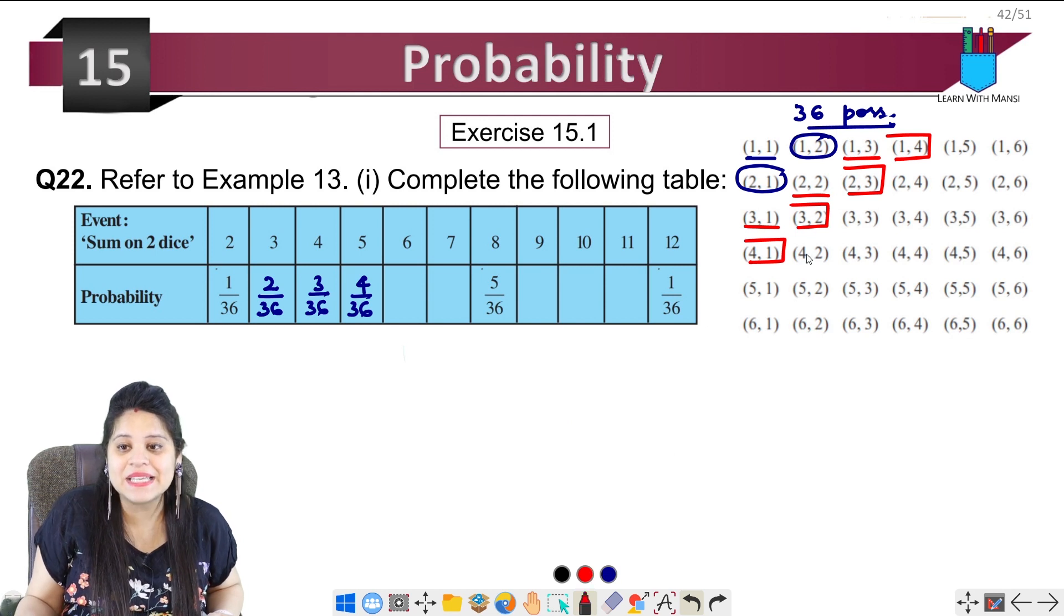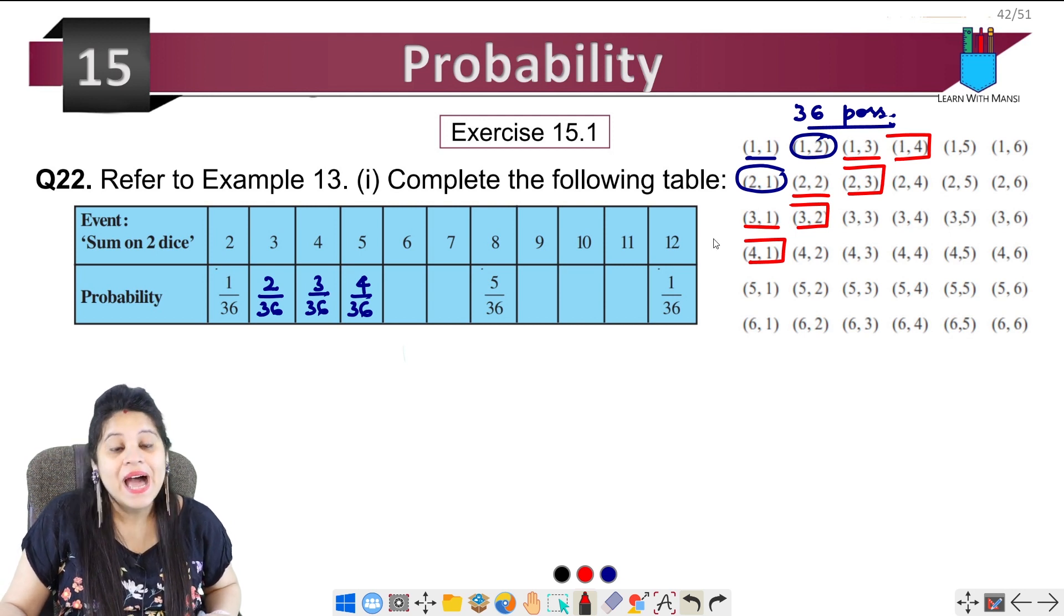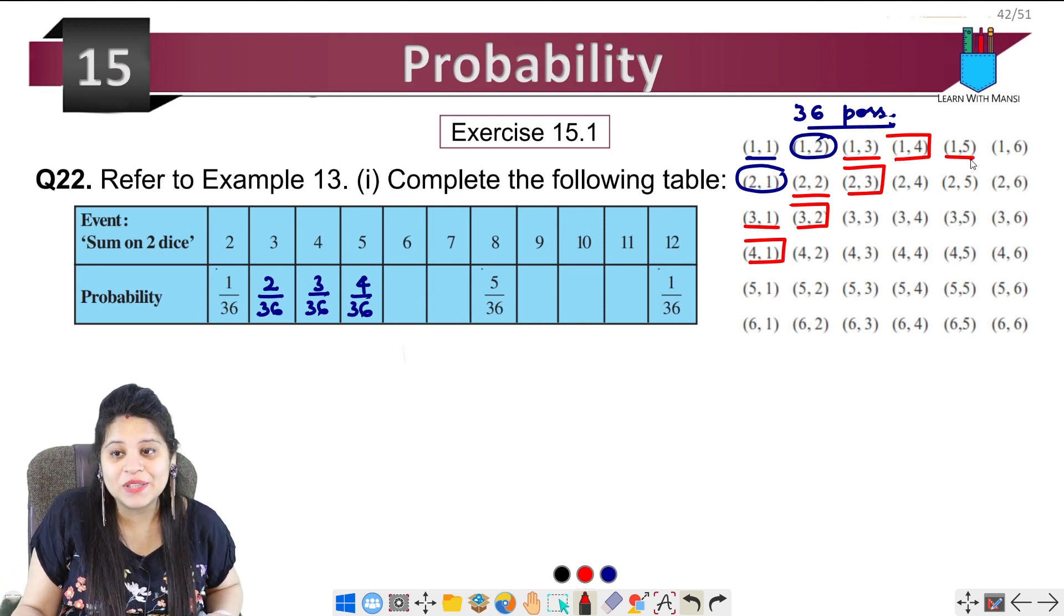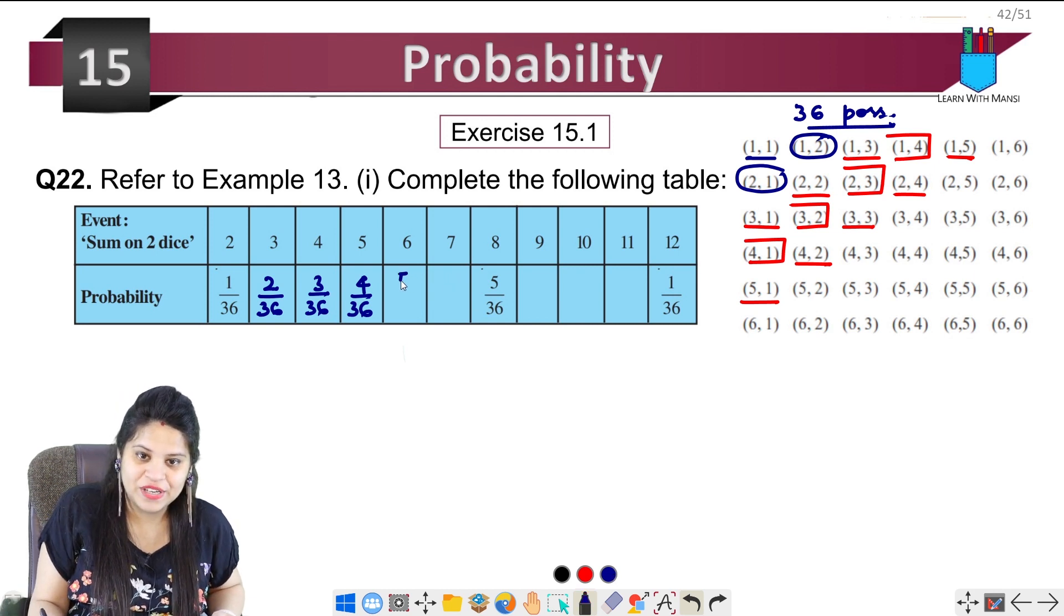You can talk about 6. So talk about 6 here. 6: 1 plus 5, 2 plus 4, 3 plus 3, 4 plus 2, and 5 plus 1. So 1, 2, 3, 4, 5 are our outcomes. So it is favorable 5 upon 36.